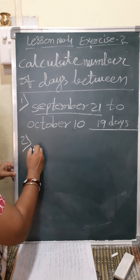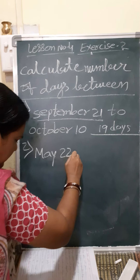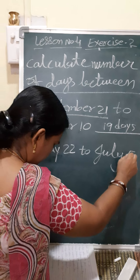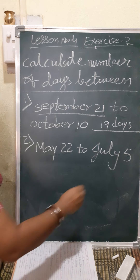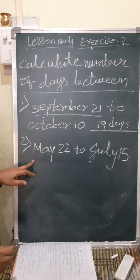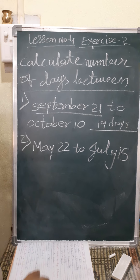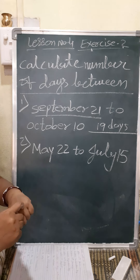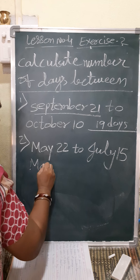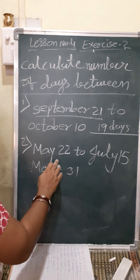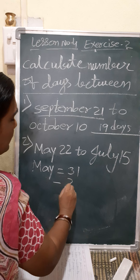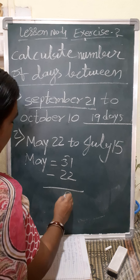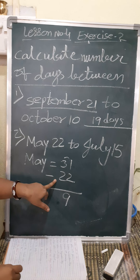Another question: May 22 to July 15 — how many days between? Again we will see. May month — January, February, March, April, May — May month is 31 days. 31 minus 22: 1 minus 2 is not going, borrow; 11 minus 2 is 9. So 9 days remain of May month.